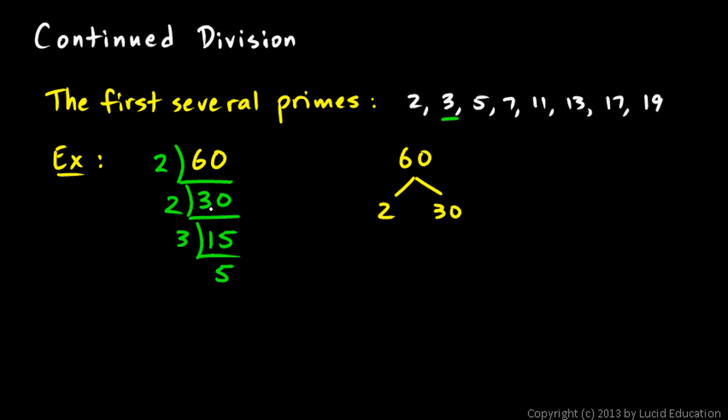And then the 30 is divisible by 2 and 15. It's 2 times 15. So we would have done 2 times 15. This is conceptually the same thing as the factor tree. It just takes up a lot less space on the page. And so in a lot of cases, it's more convenient for that reason.